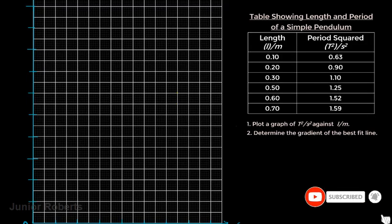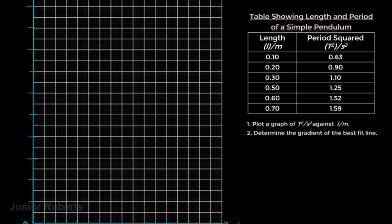This is Junior Roberts coming to you with realjuniorroberts.com. In this video we're going to be looking at how to plot a graph in physics given a set of data. Here we have a table with some data, and we will be using this data to plot a graph. We have length in one column and period squared in another. This table shows data for the length and period of a simple pendulum.